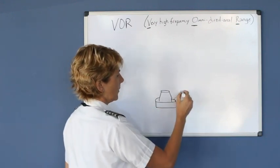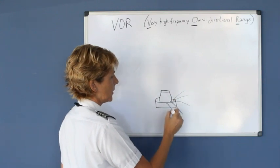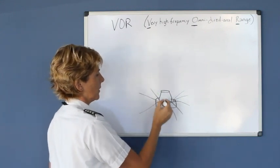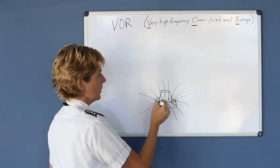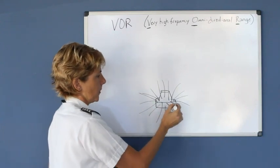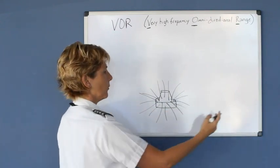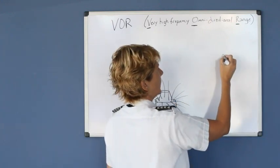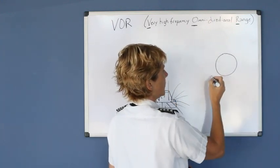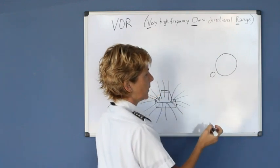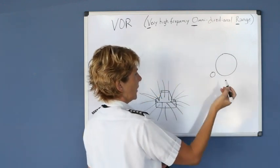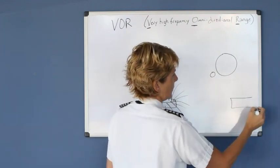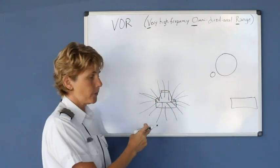These VOR frequencies project 360 degrees. And then we use these projections to navigate by. We can either fly to the station or from the station. And the equipment in your airplane that we use are your VOR indicators. And on your navigation radio, you put in the frequency associated with this VOR.